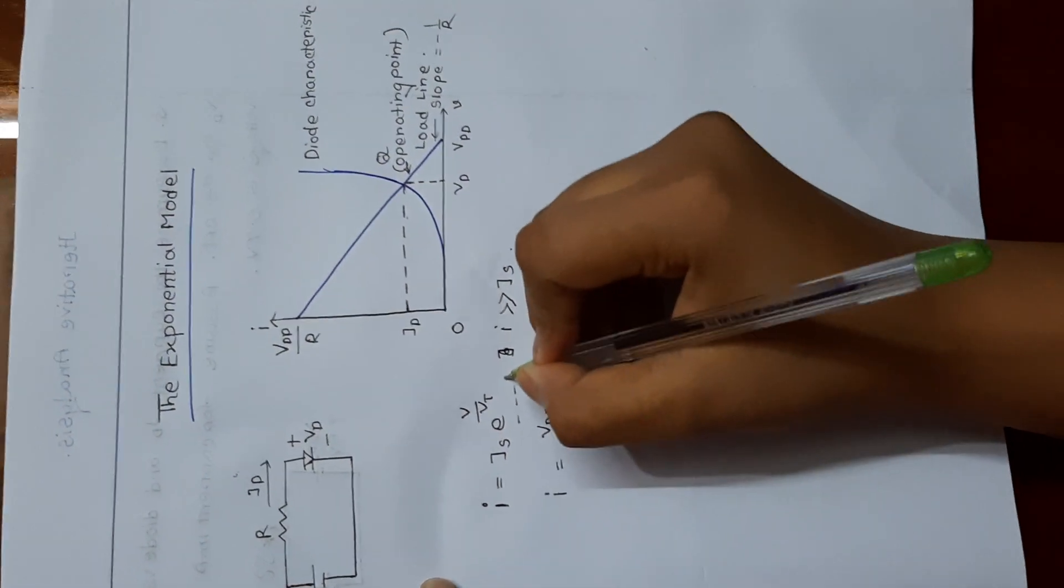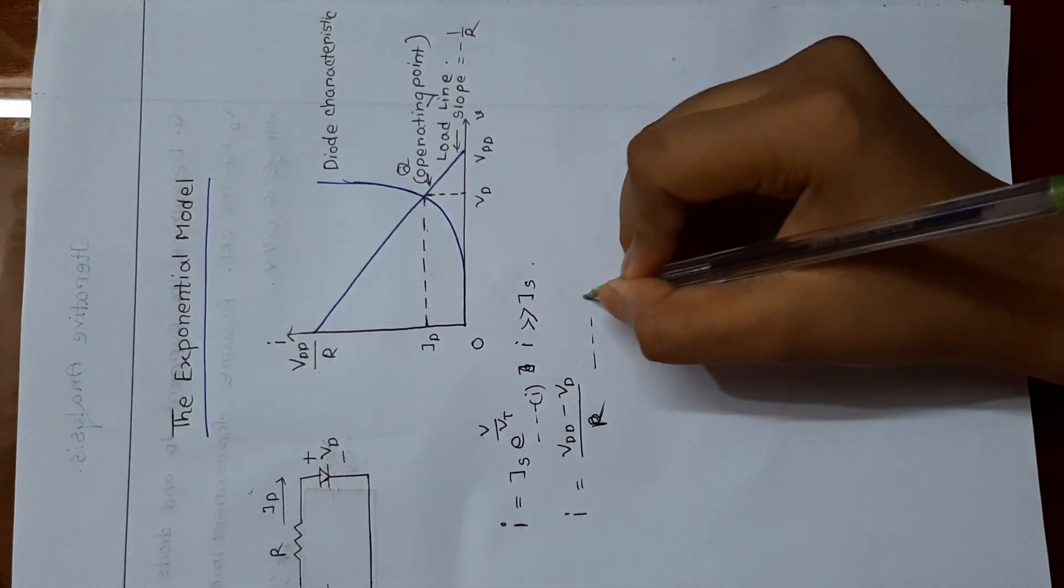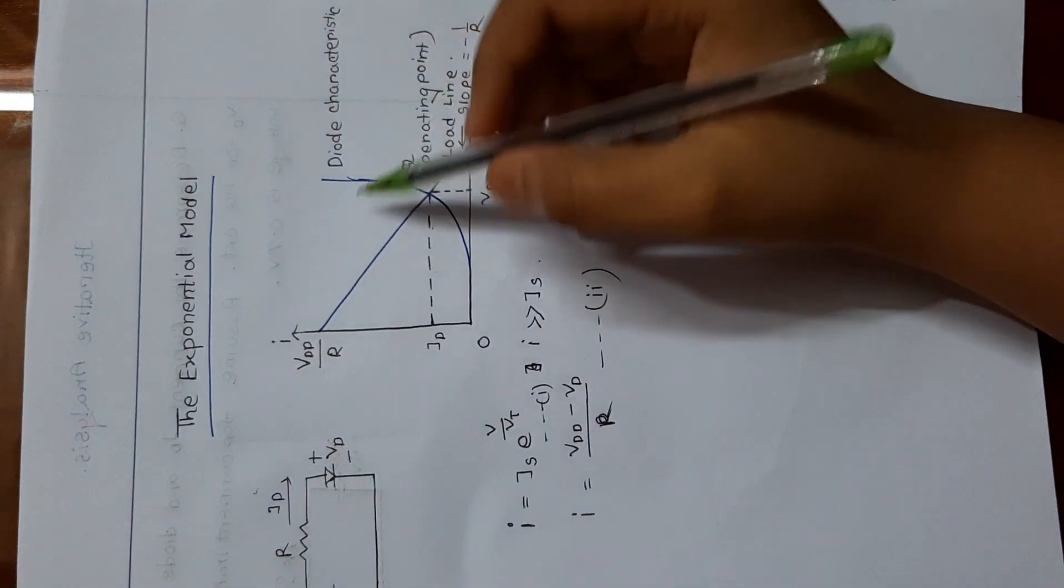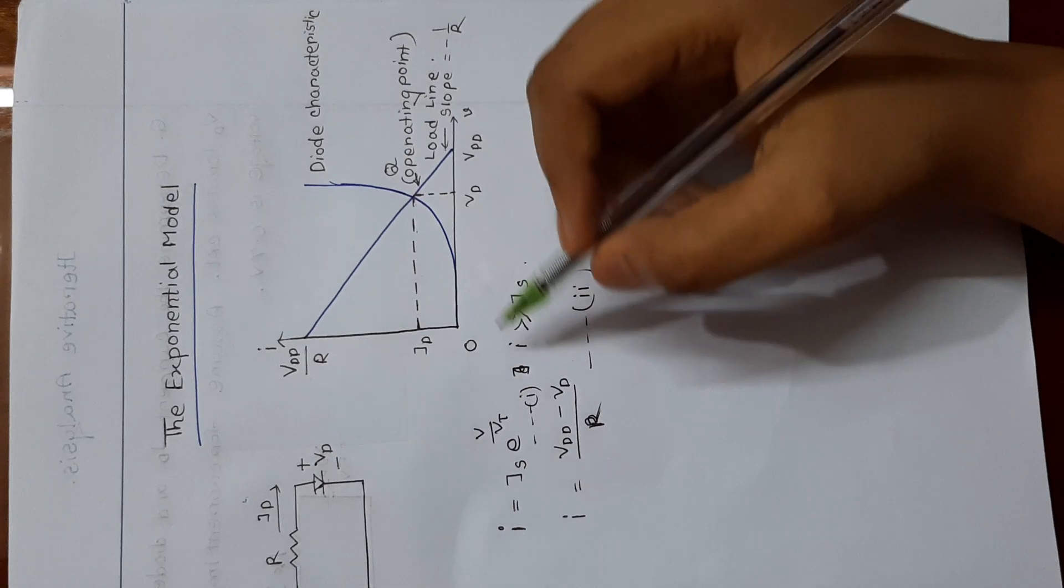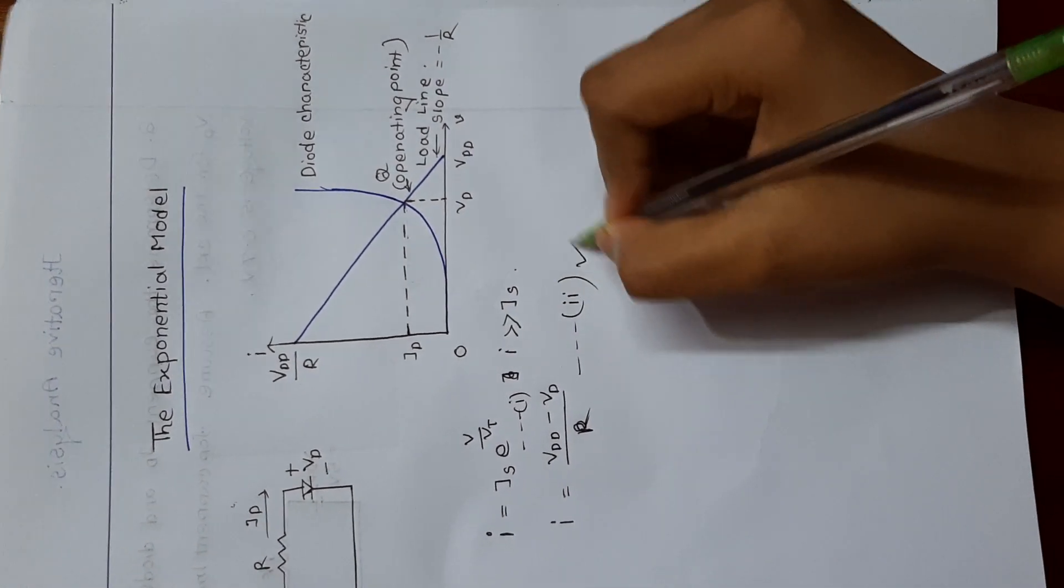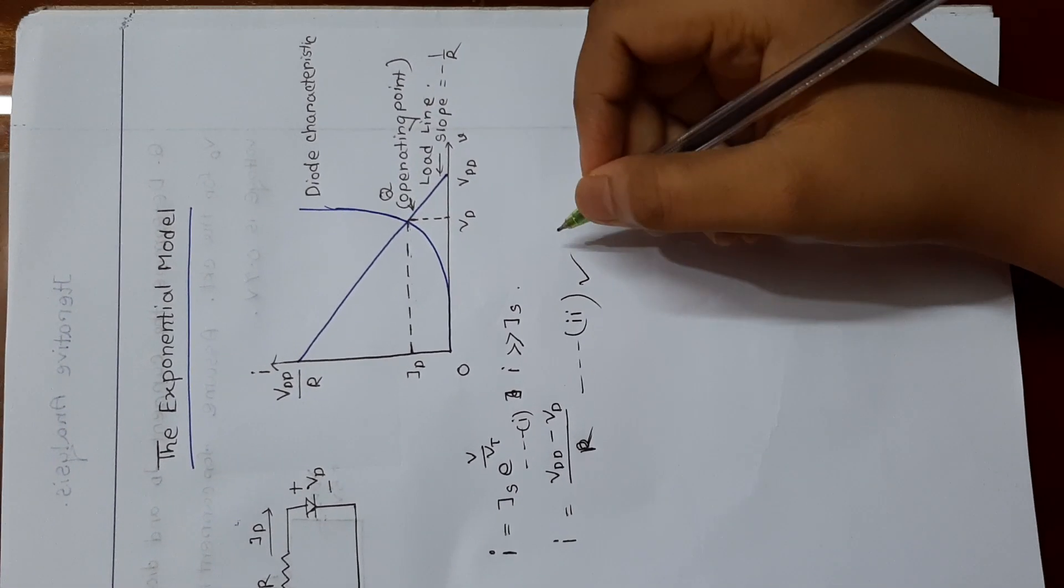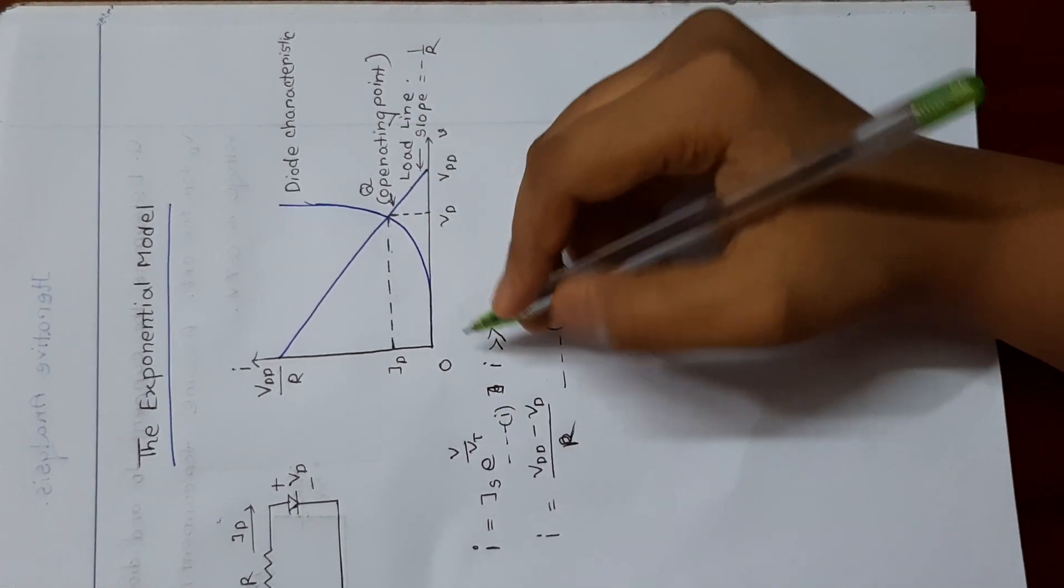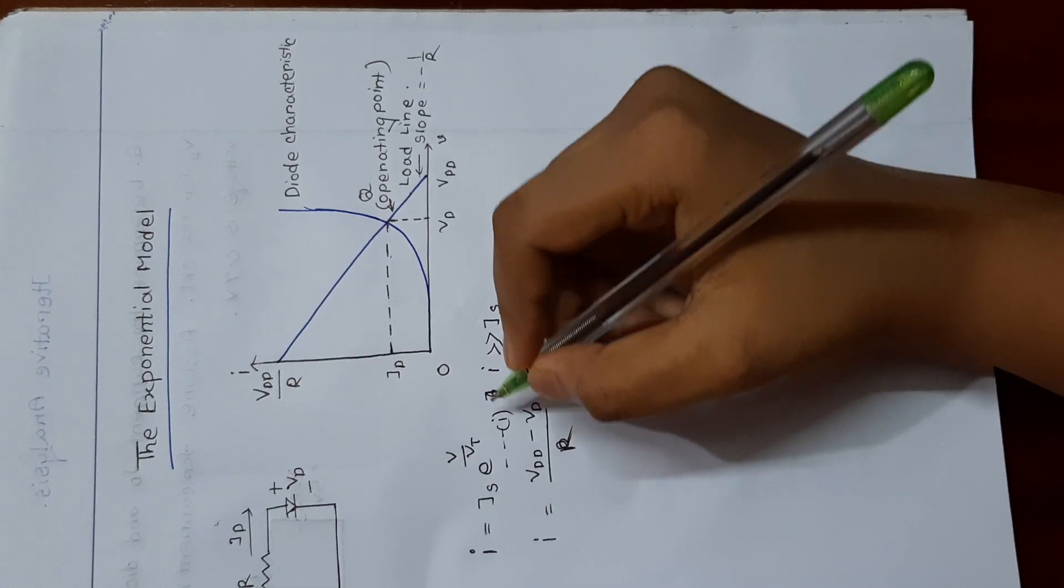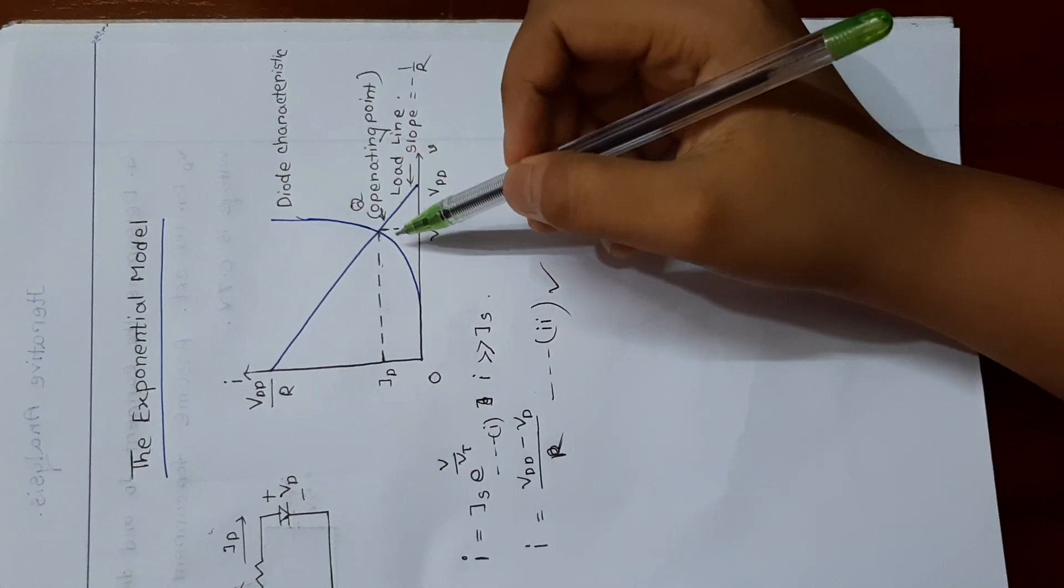So this is equation number 1, and this is equation number 2. If we plot these two equations in this graph, we can find from this equation a straight line. That is called the load line.